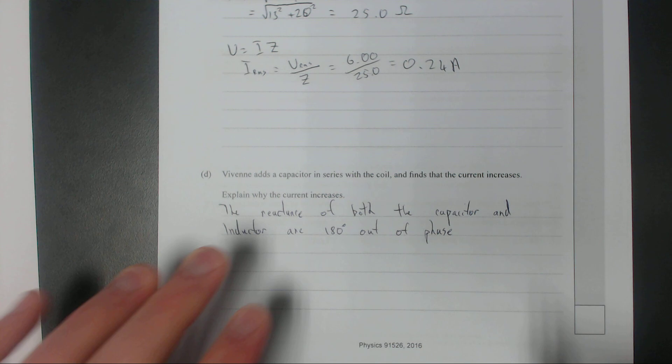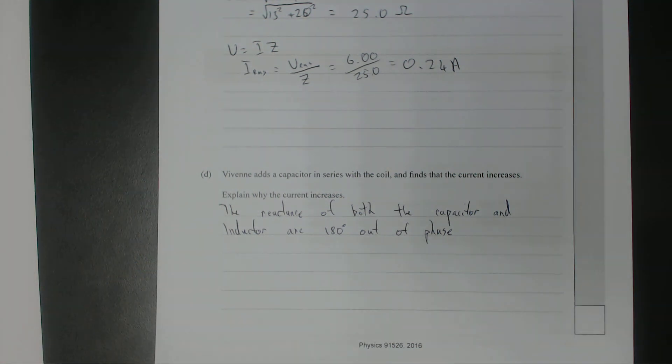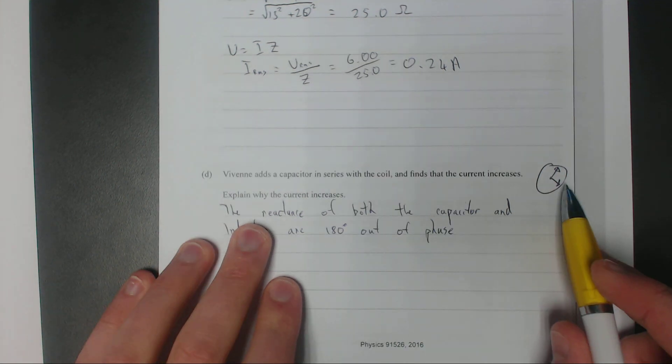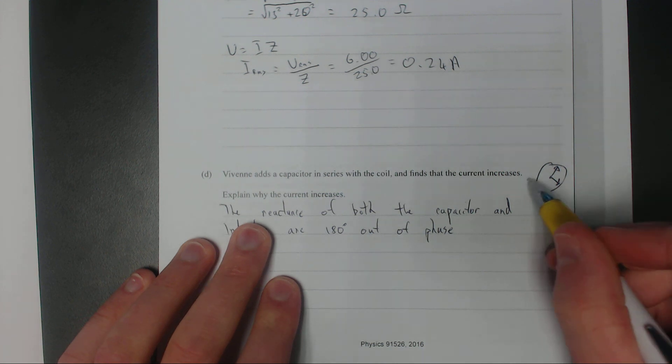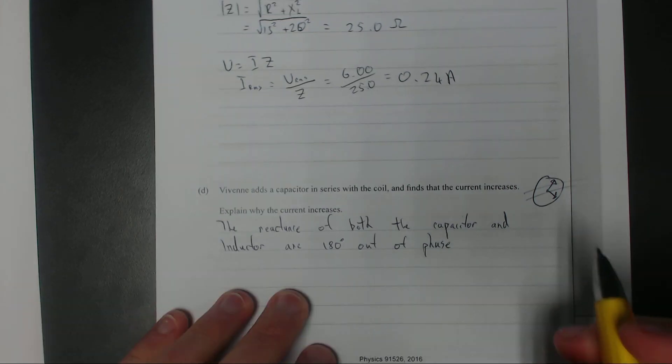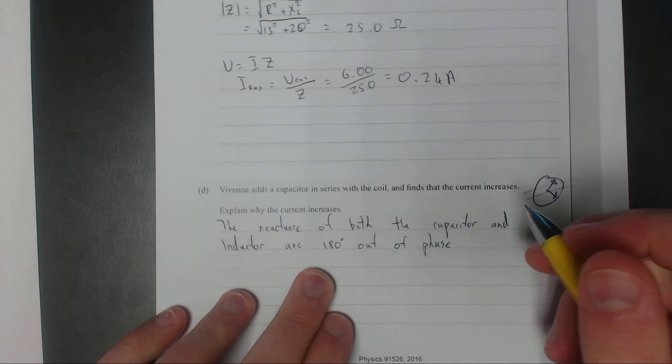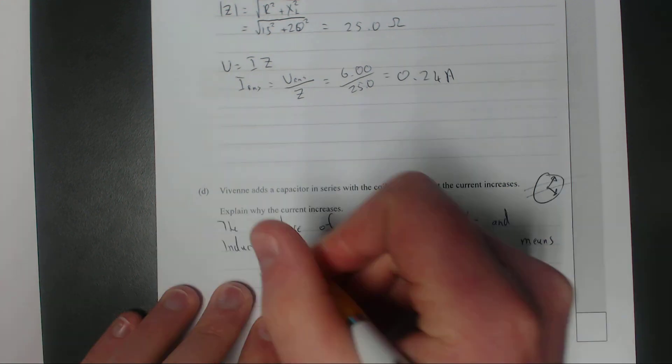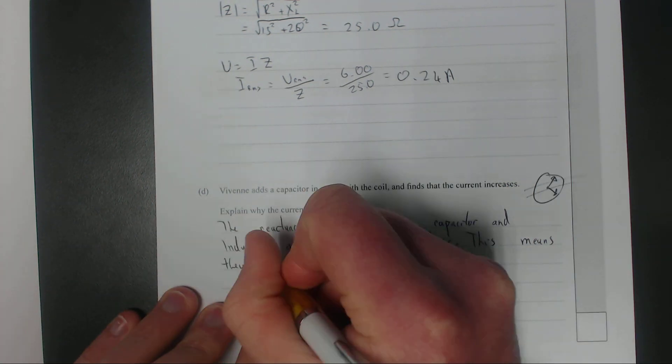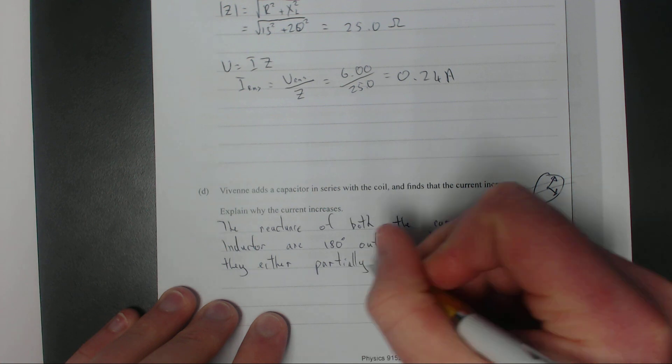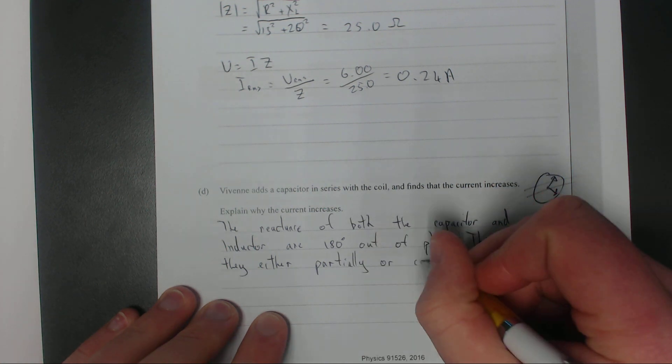The capacitor and inductor are 180 degrees out of phase, which is kind of neat, which means you can do some cancellations because they just add together like vectors. This means they either partially, because one could be bigger than the other, or if they're exactly the same size, completely cancel out.